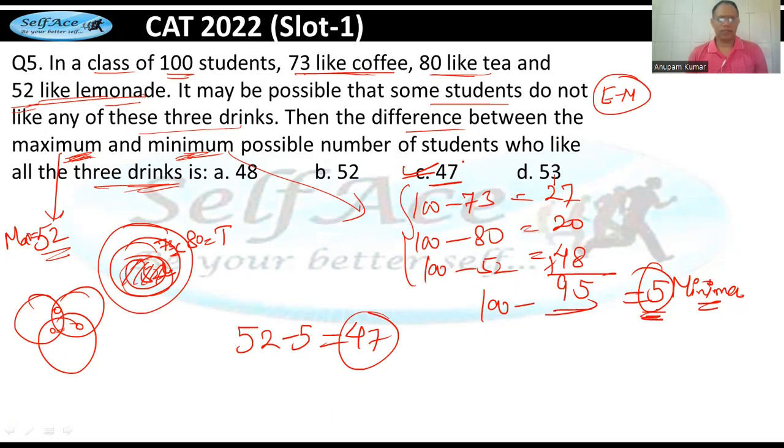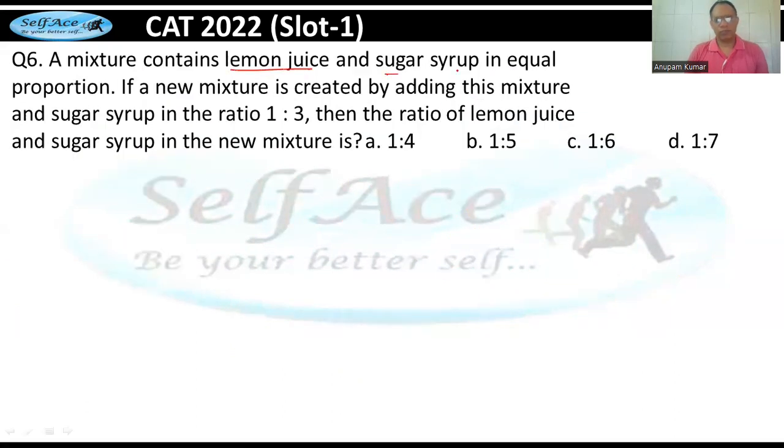A mixture contains lemon juice and sugar syrup in equal proportion. If a new mixture is created by adding this mixture and sugar syrup in the ratio 1:3, then the ratio of lemon and sugar... I'm really sorry but again an easy question from mixture alligation.